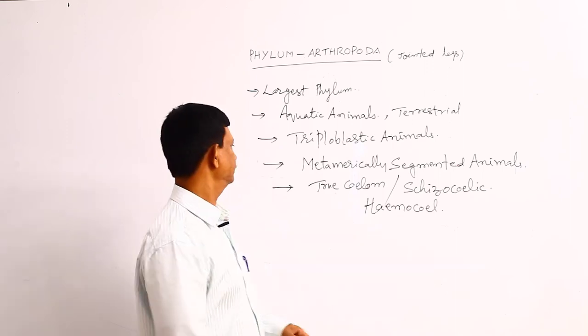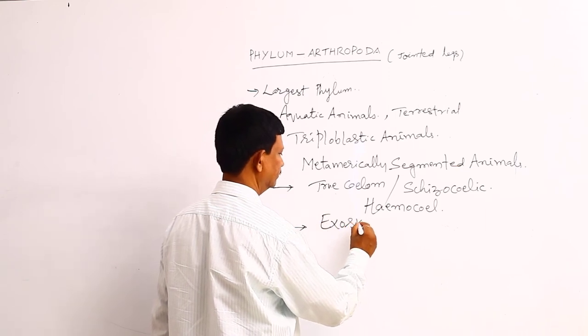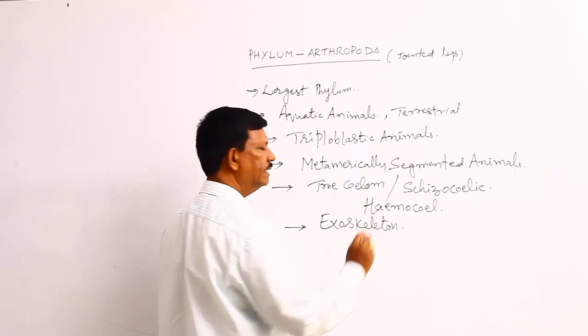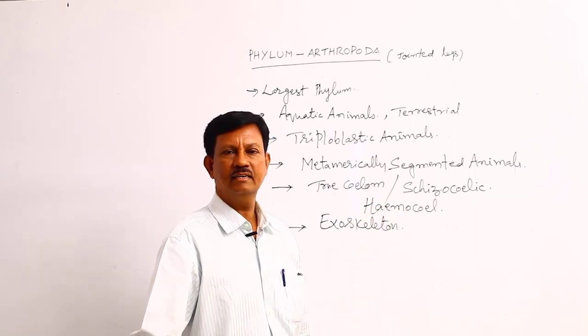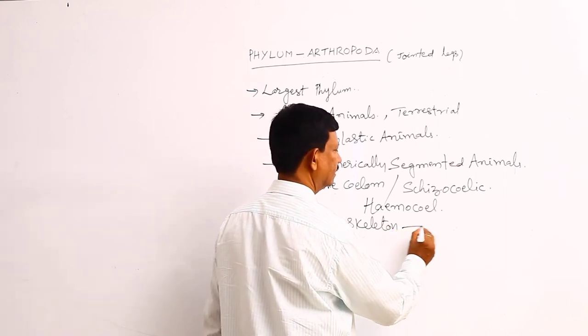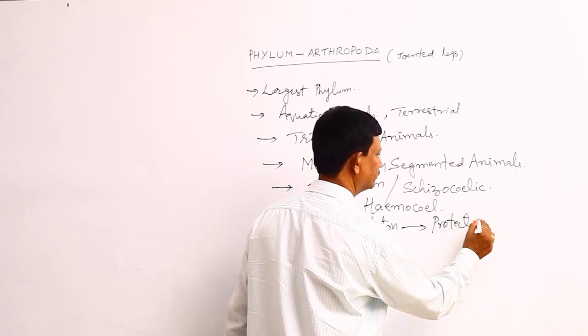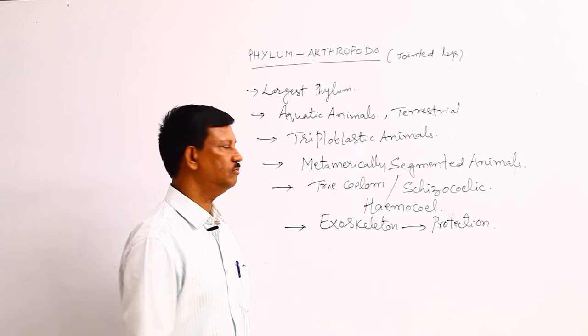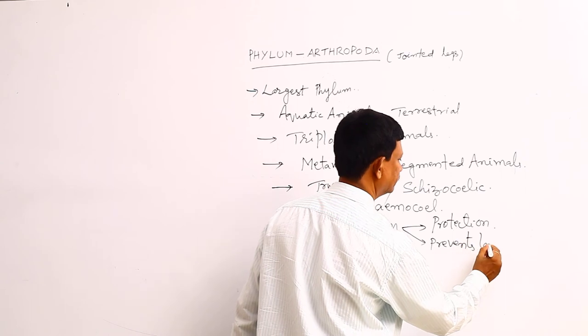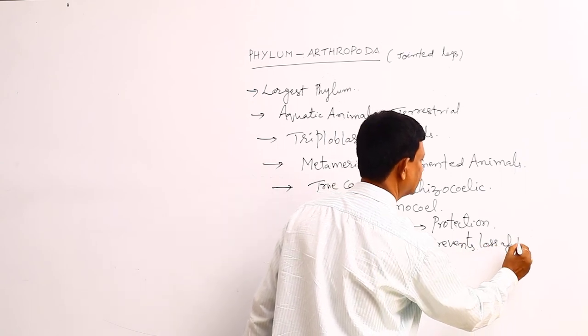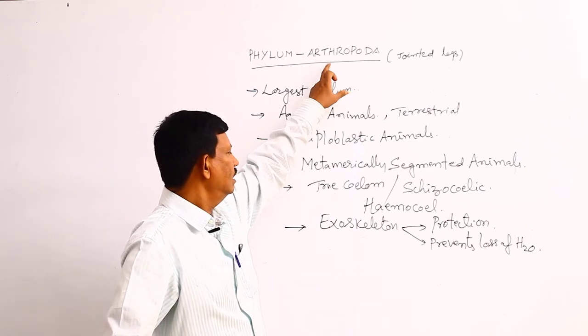Exoskeleton: the body is externally covered by chitinous exoskeleton. This chitinous exoskeleton gives protection to the body and also prevents the loss of water.